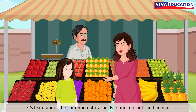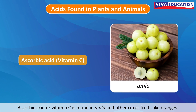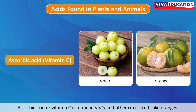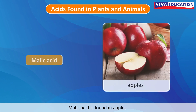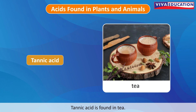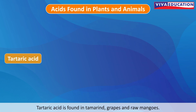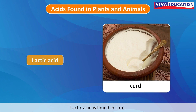Let's learn about the common natural acids found in plants and animals. Acetic acid is found in vinegar. Ascorbic acid, or vitamin C, is found in amla and other citrus fruits like oranges. Citric acid is found in lemons and oranges. Malic acid is found in apples. Oxalic acid is found in spinach. Tannic acid is found in tea. Tartaric acid is found in tamarind, grapes and raw mangoes. Lactic acid is found in curd.